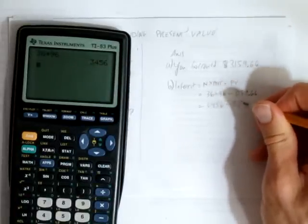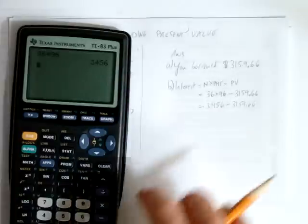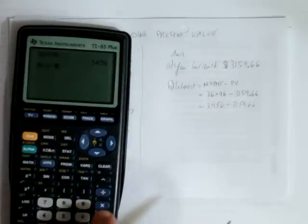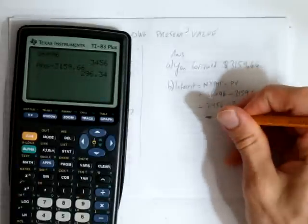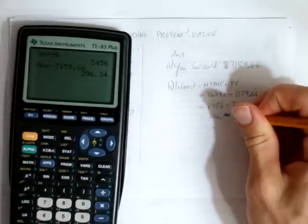minus $3,159.66. So we'll just subtract that, minus $3,159.66, and we get $296.34.